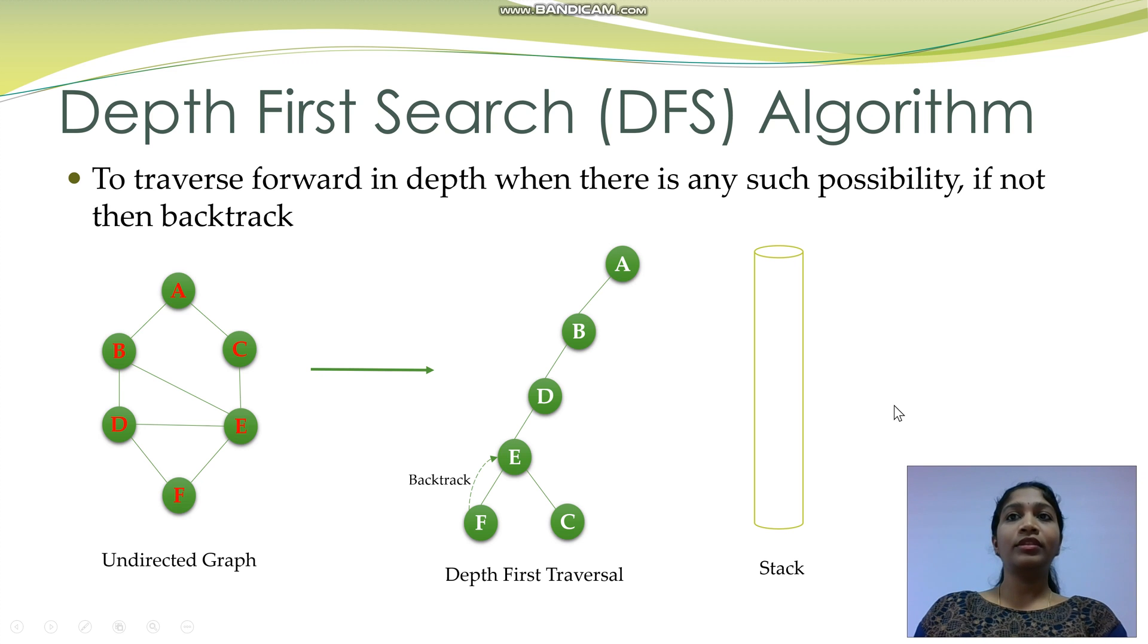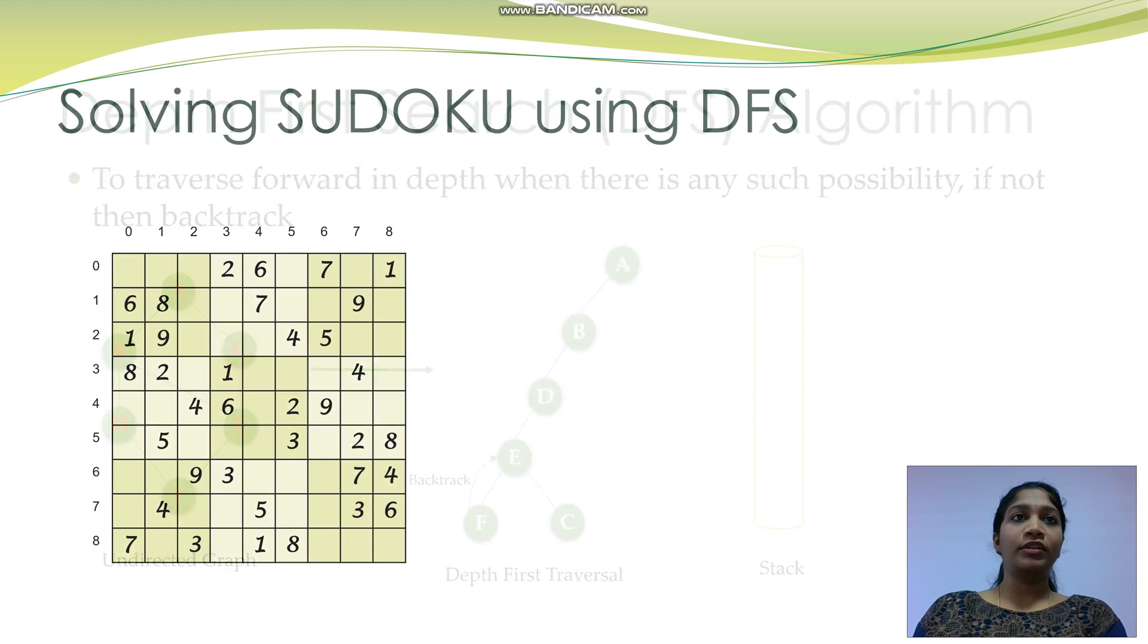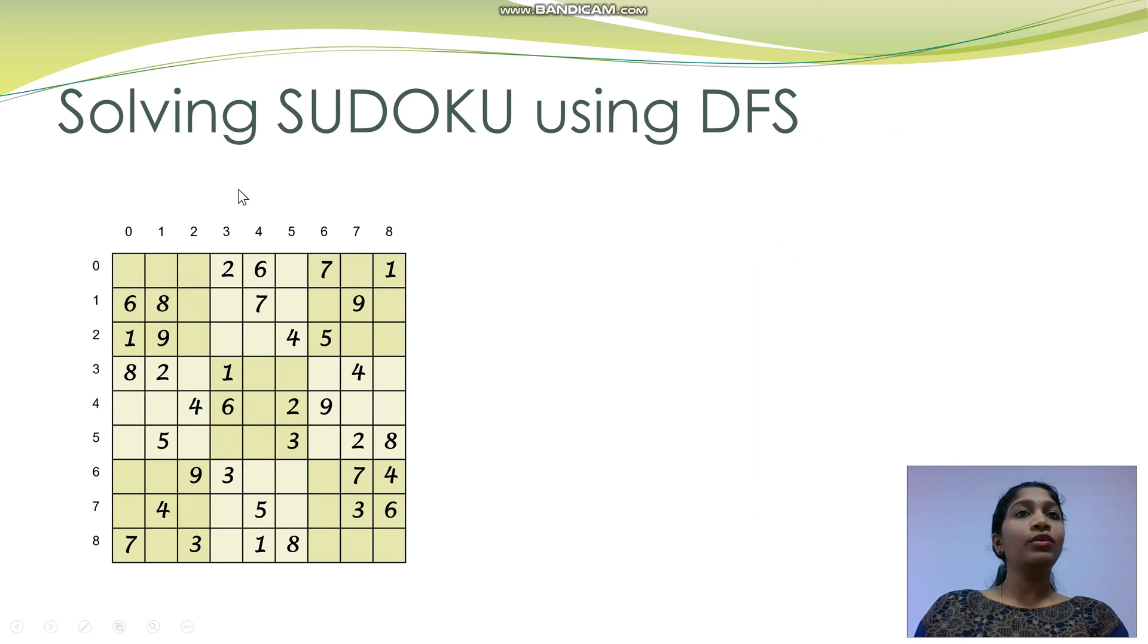Let's now see how to solve the Sudoku using the DFS algorithm. This is how a Sudoku puzzle looks. Our goal is to fill the empty cells with values from 1 to 9. Each number can appear only once in each row, column or a box.